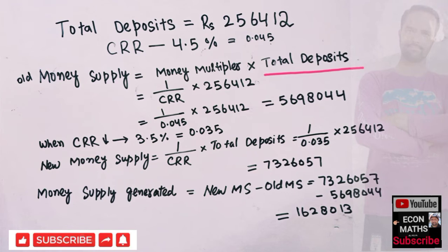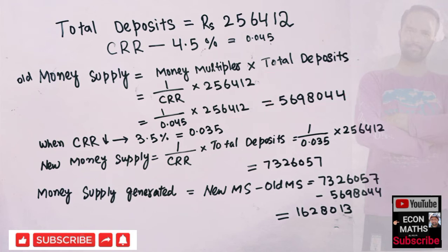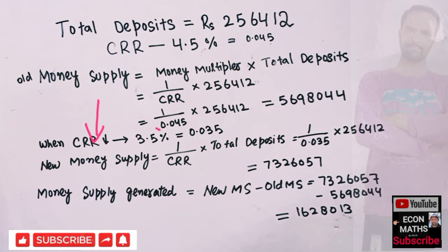When we multiply this, we have 1 upon 0.045 times the initial deposits. We get the figure of 56 lakh 98,044 rupees. That is the money supply generated when CRR is 4.5 percent and initial total deposits are 2 lakh 56,412.